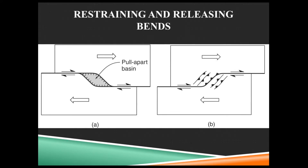Looking at the transform fault not being a pure straight line for its whole length: we get pull-apart basins and we get uplift depending on whether it's a restraining bend or a releasing bend. In this case, the direction of the bend creates extension — this is a pull-apart basin. There is transtension here because as the two blocks try to move, it's stretching this area.